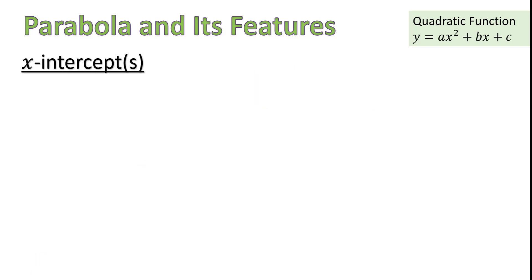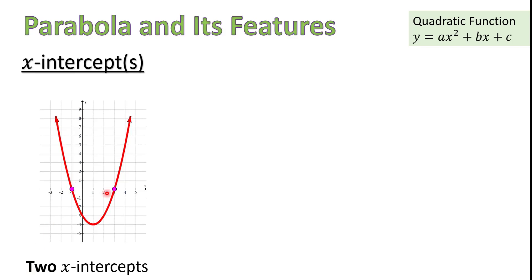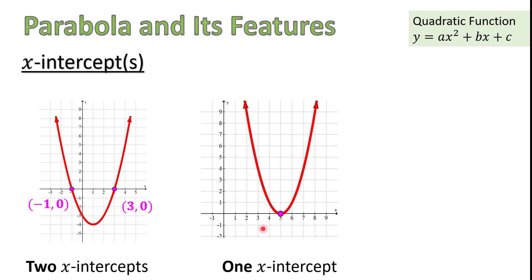Finally, we're going to talk about x-intercepts. X-intercepts have the same idea as y-intercepts — these are the point or points where the parabola crosses the x-axis. When it comes to x-intercepts and parabolas, there are different cases. One is when the parabola crosses the x-axis at two places, meaning there are two x-intercepts. In this case, their coordinates are (negative 1, 0) and (3, 0). It's also possible that the parabola touches the x-axis at only one place, meaning there is only one x-intercept. The x-intercept for this parabola is (5, 0).